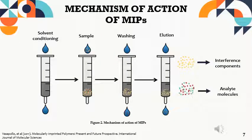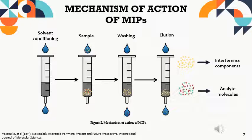Now, knowing what the MIPs are and their components, we will see how these materials work. The mechanics are the following: in a solid phase extraction column, a quantity of MIPs is first conditioned with solvent, then the sample containing our analyte of interest is added. A wash is carried out to eliminate interfering components that each sample may have, to finally perform an elution to remove the analyte and quantify how much was retained in our MIPs.